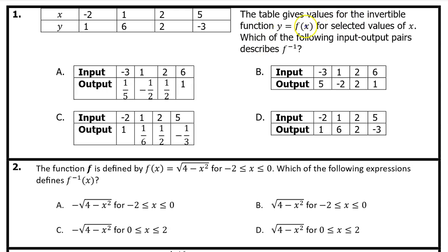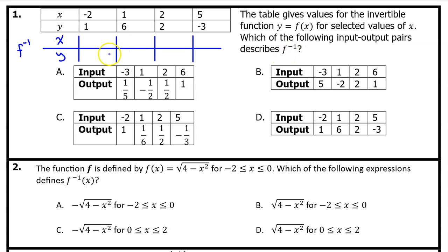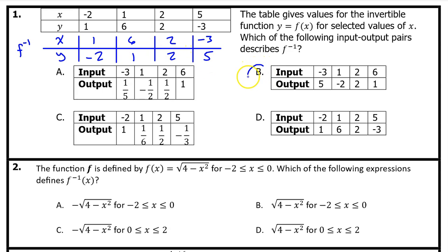The table gives values for the invertible function y equals f of x for selected values of x. Which of the following input-output pairs describes f inverse? To find f inverse, we reverse all of the inputs and outputs. So f inverse will have the points 1 comma negative 2, 6 comma 1, 2 comma 2, and negative 3 comma 5. If we rewrite these in order, we get option B.